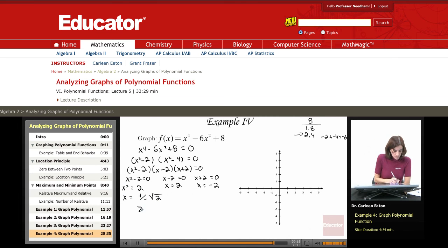I have zeros at x equals 2, negative 2 and then square root of 2 is approximately 1.4. So let's rewrite that as 1.4 and negative 1.4 to help me with the graph. So plotting those out, I have a zero at 2, negative 2, and then another one at 1.4 and negative 1.4.